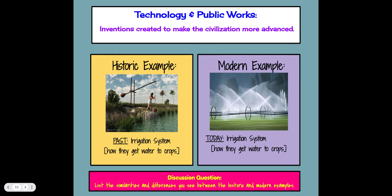Technology and public works is the invention created to make civilization more advanced. In the past, they built irrigation systems to get water to crops — the ancient version of a sprinkler system. Today's irrigation system is a very advanced sprinkler system that moves around and waters crops much more efficiently, ensuring everyone has access to food. List the similarities and differences you see between the historic and modern examples of technology and public works.